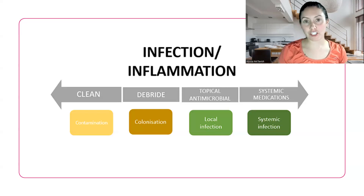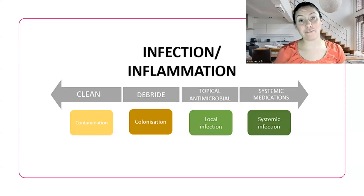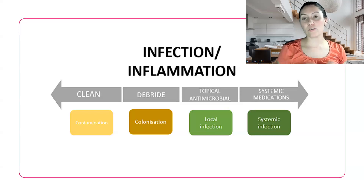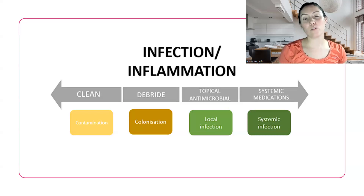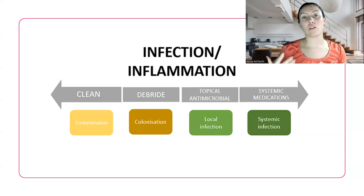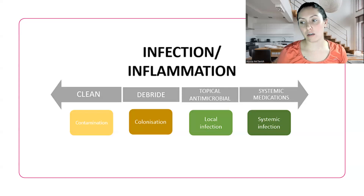Now, if we have a local infection — if you're curious how to know the difference between a local infection and a systemic infection, check out my video linked above. They use NERDS and STONIES. NERDS determines local infection, which is treated through a topical antimicrobial. STONIES determines a systemic infection, which you would have to treat through an oral antibiotic — sometimes even IV antibiotics — but antibiotics are needed regardless.